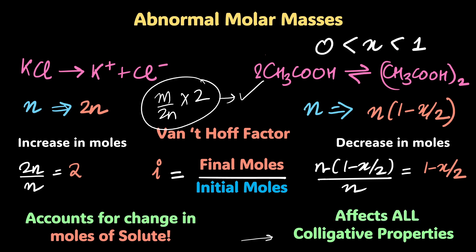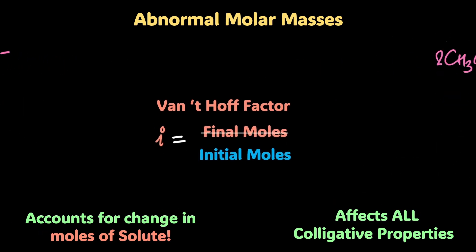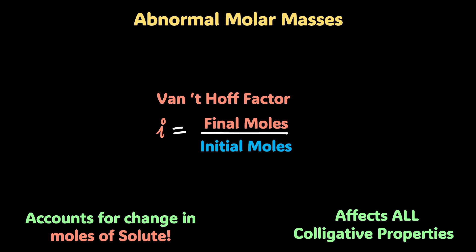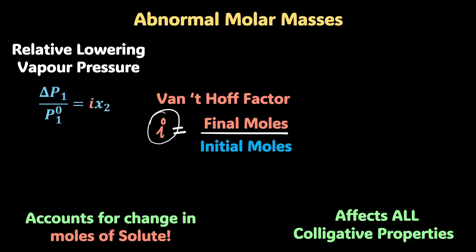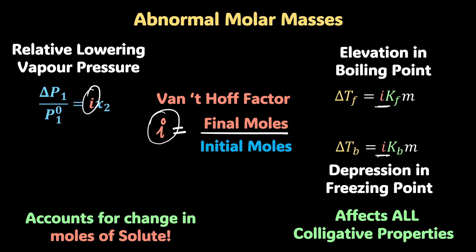And well, then shouldn't it affect all colligative properties, not just whatever we are doing here? If you're thinking that, you're absolutely right - it affects all colligative properties. Wherever you have moles of solute, that is going to be affected by this. So now relative lowering of vapor pressure becomes i times x₂. ΔP₁/P₁⁰ is i times x₂. Elevation in boiling point ΔTf is i times Kf times m. ΔTb is i times Kb times m. And osmotic pressure π is i times CRT. Oh, would you look at that - everything gets multiplied by i.